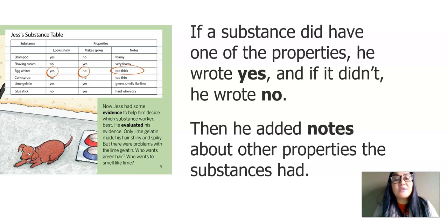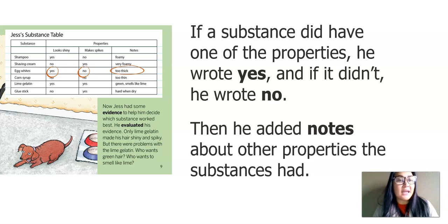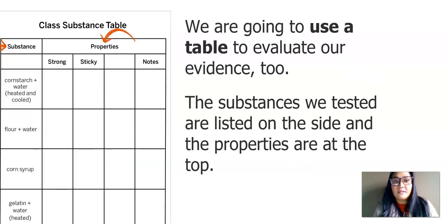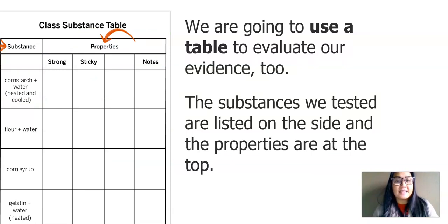Then he added notes about other properties the substances had. So for egg whites, he wrote yes, that it looks shiny; no, it doesn't make spikes; and for his notes, he wrote that it was too thick. We're going to use a table just like what Jess did to evaluate our evidence too.